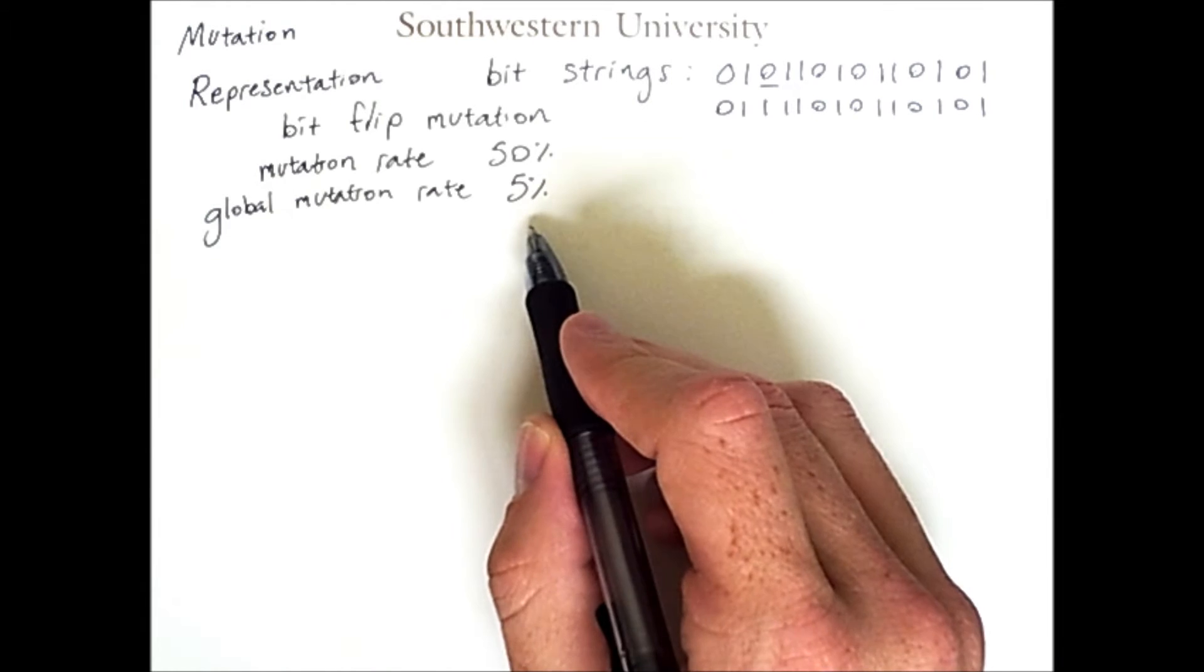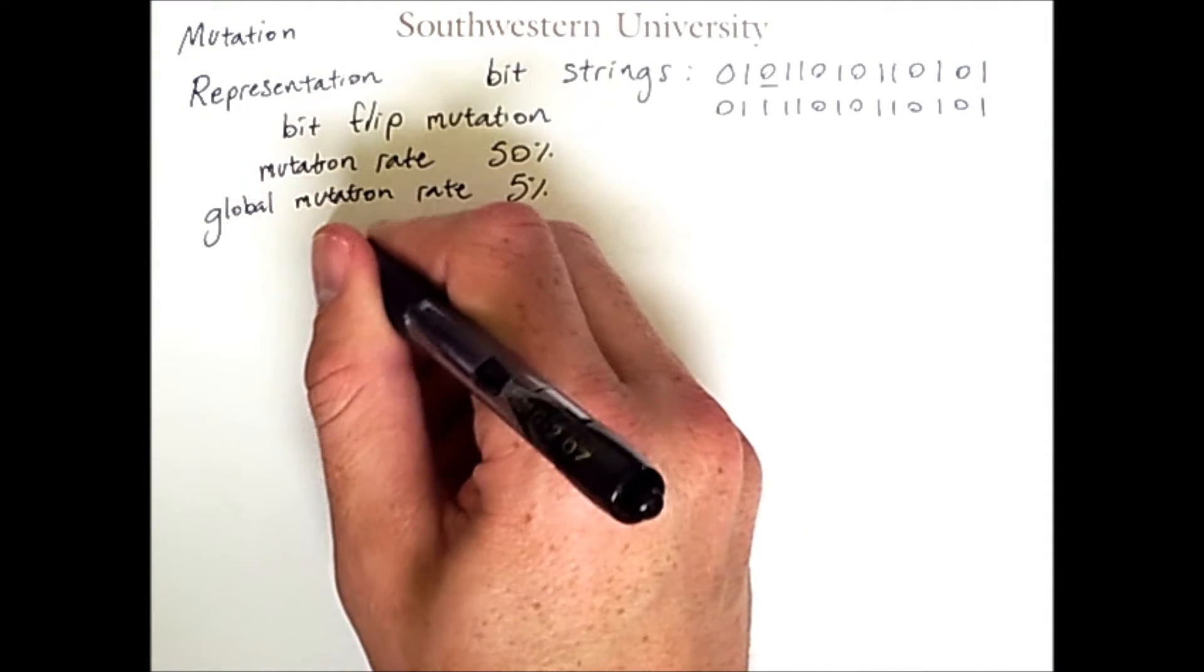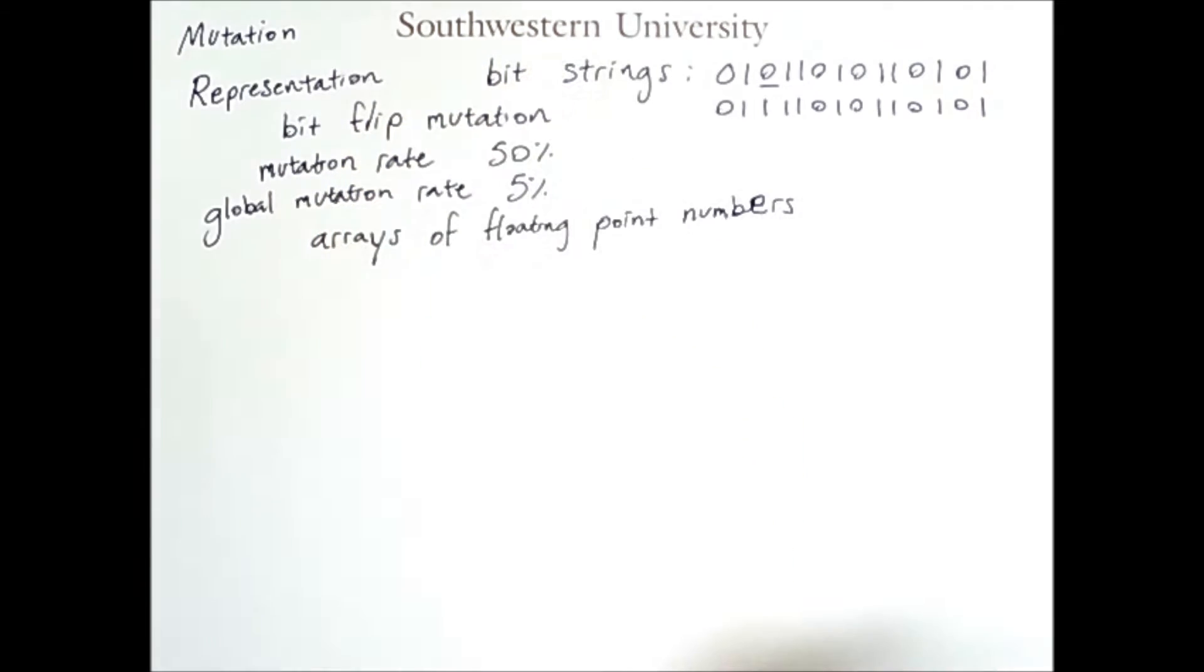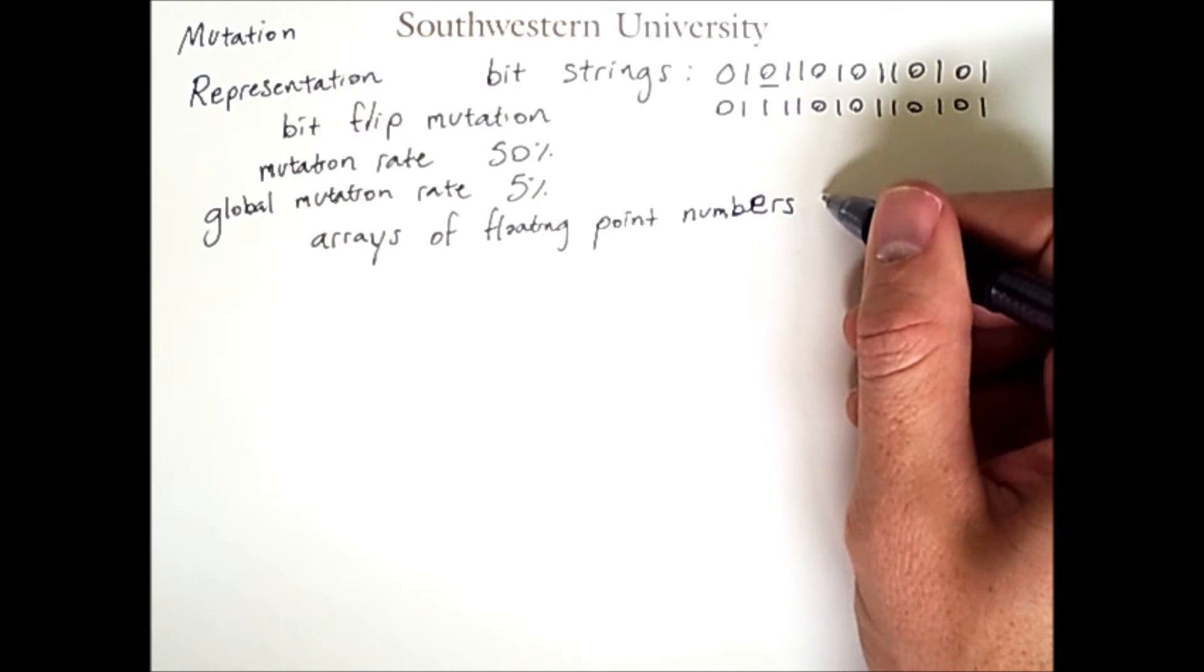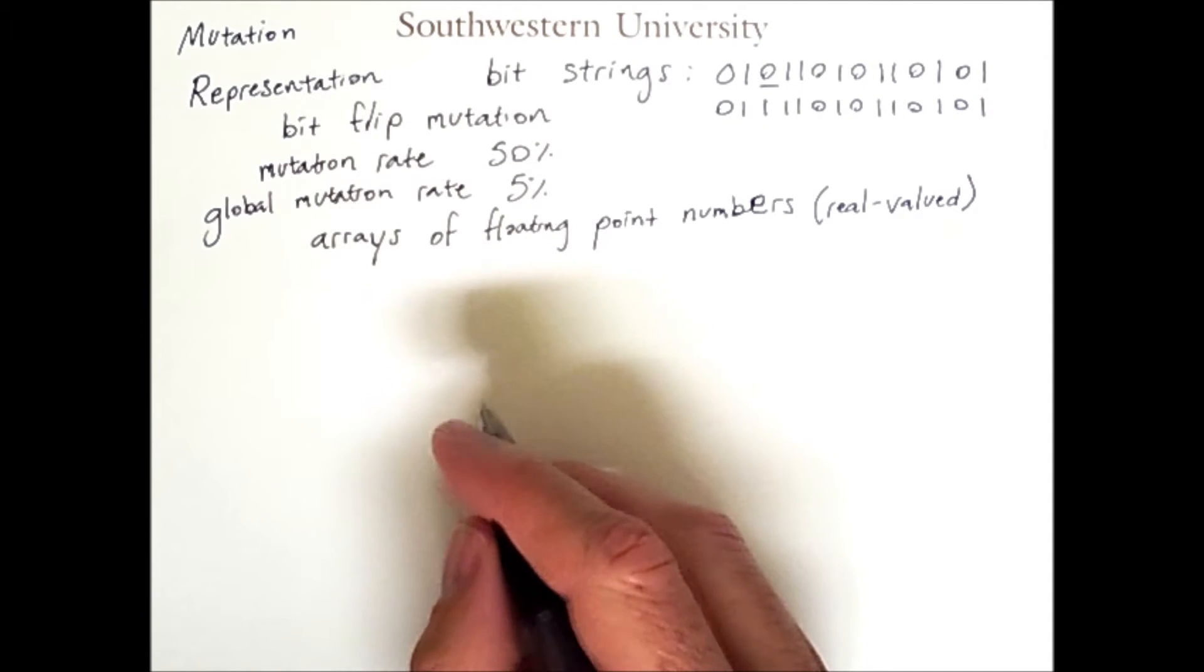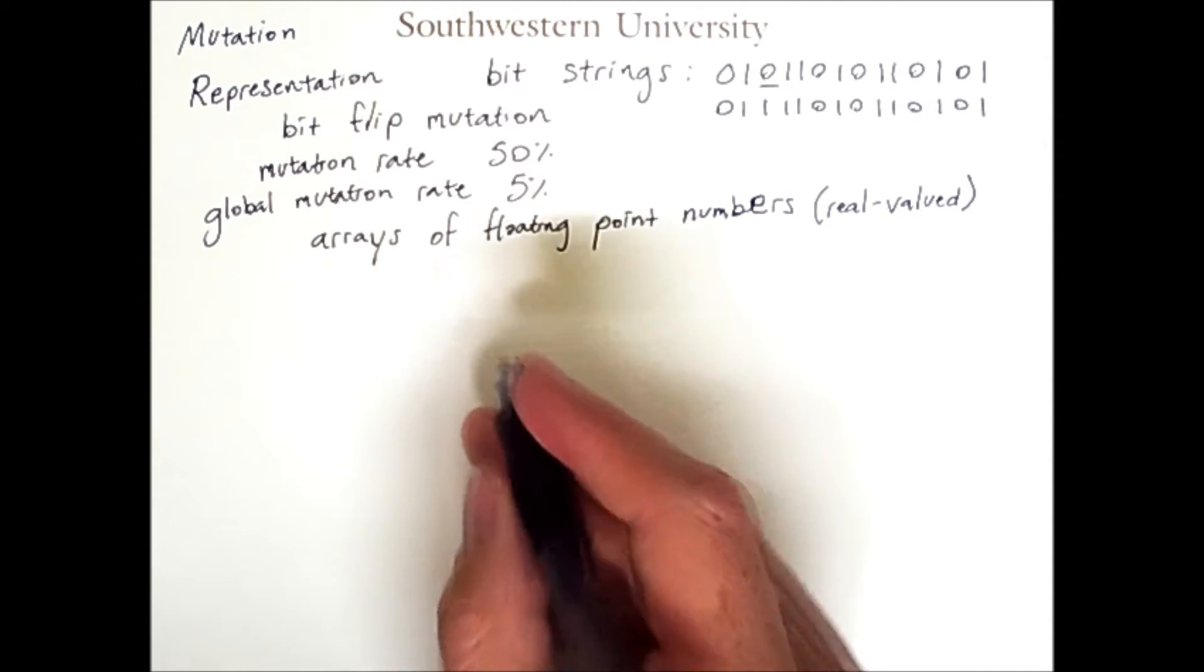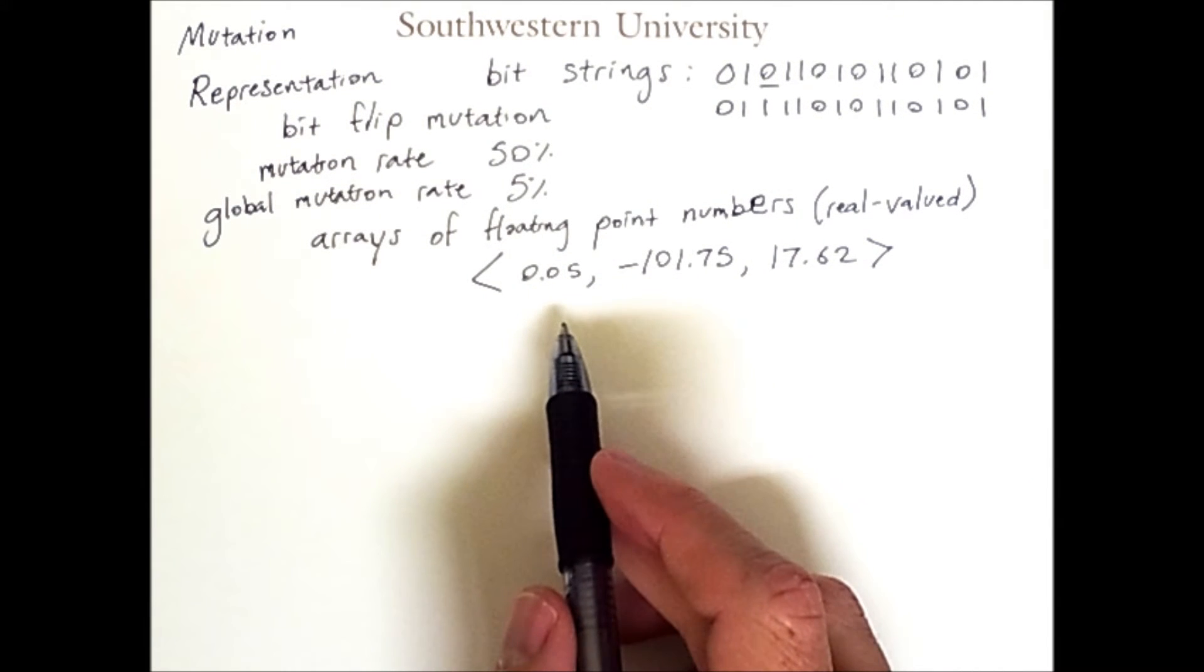there is a 5% chance that that bit will be flipped. Another common representation is arrays of floating-point numbers. This is also known as a real-valued representation. An example of such a representation would be the following.